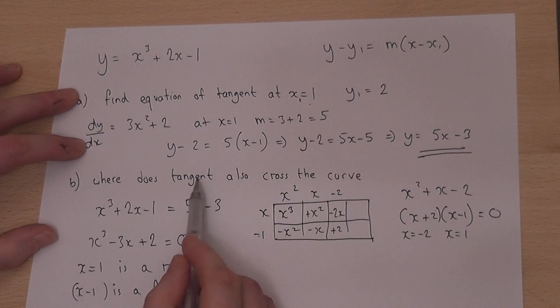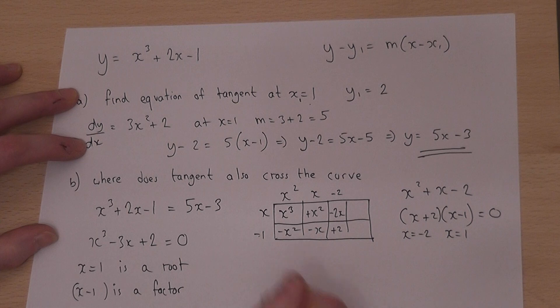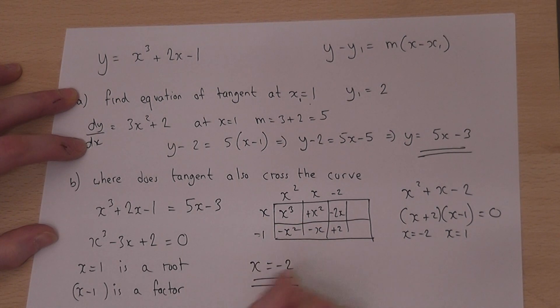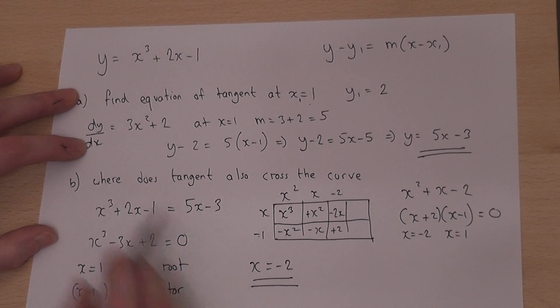So the other value, where the tangent and the curve intersect, is at x equals minus 2. And when x is minus 2, I can find the y-coordinate.